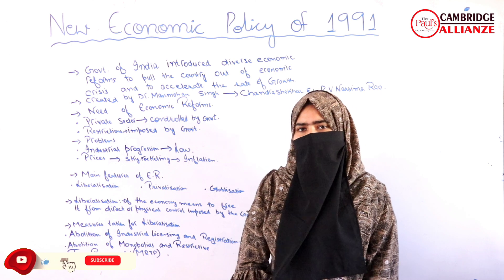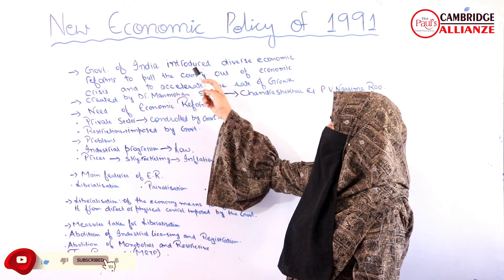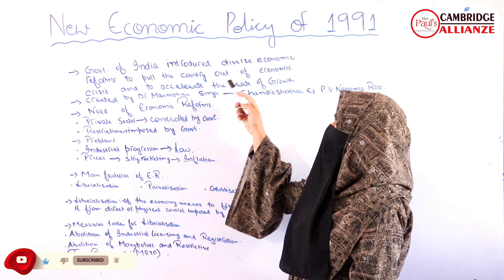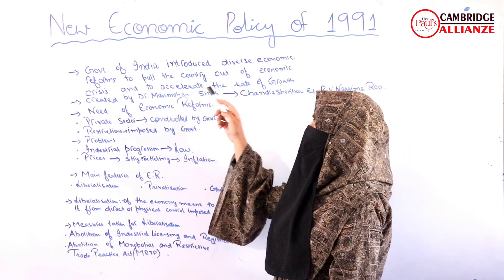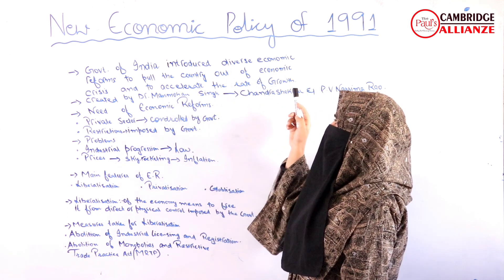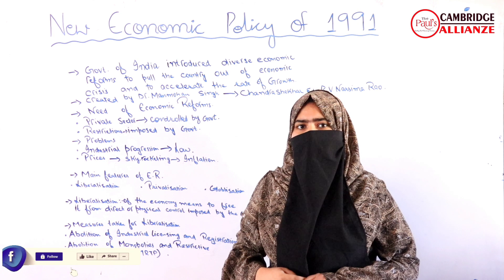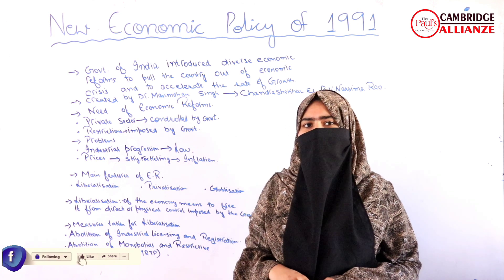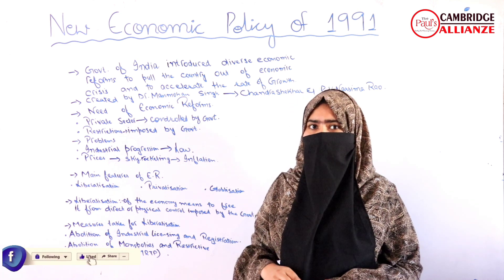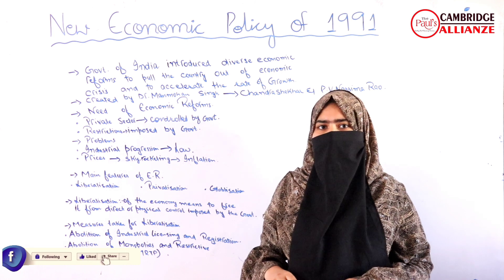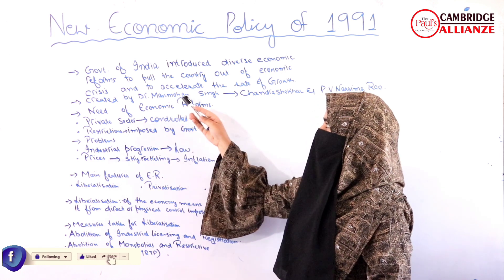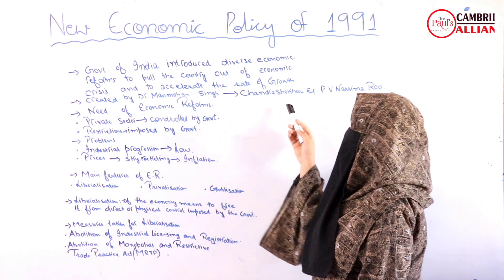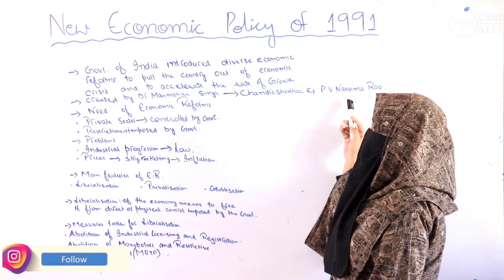Since 1991, the government of India introduced diverse economic reforms to pull the country out of economic crisis and to accelerate the rate of growth. One of the important policies under this economic reform was the new industrial policy of 1991. This policy was created by Dr. Manmohan Singh under the recommendations of Chandra Shekhar and P.V. Narasimha Rao.